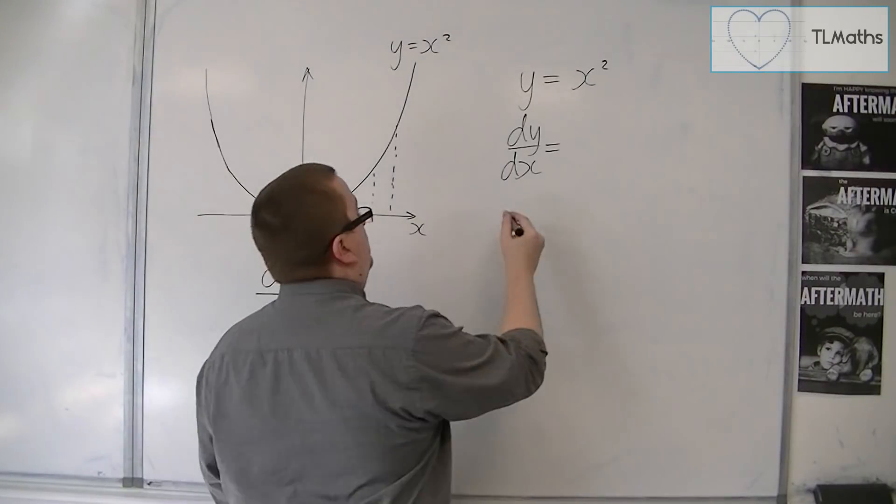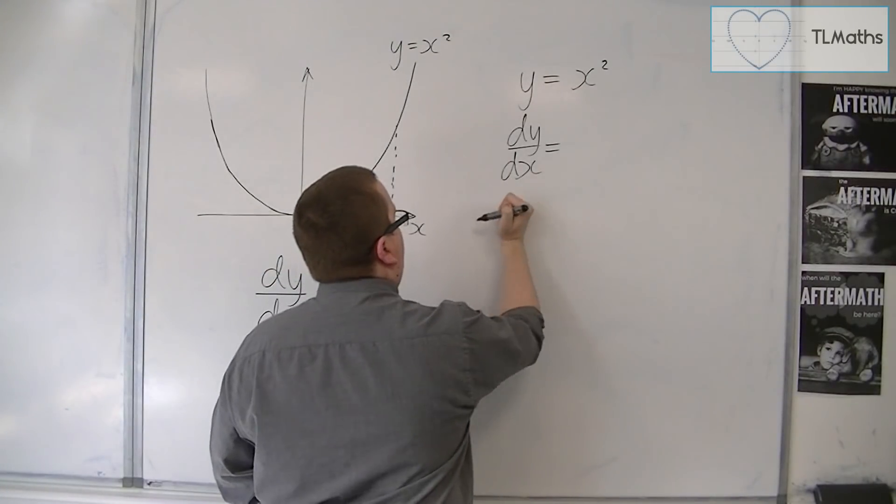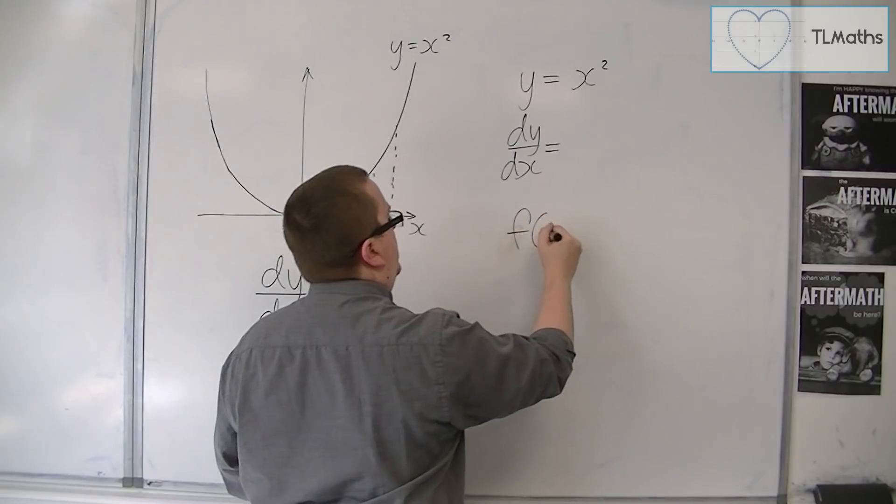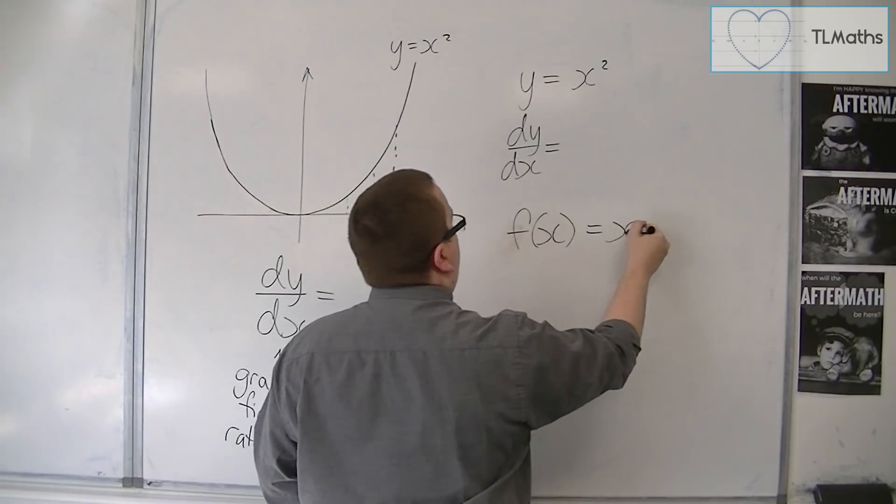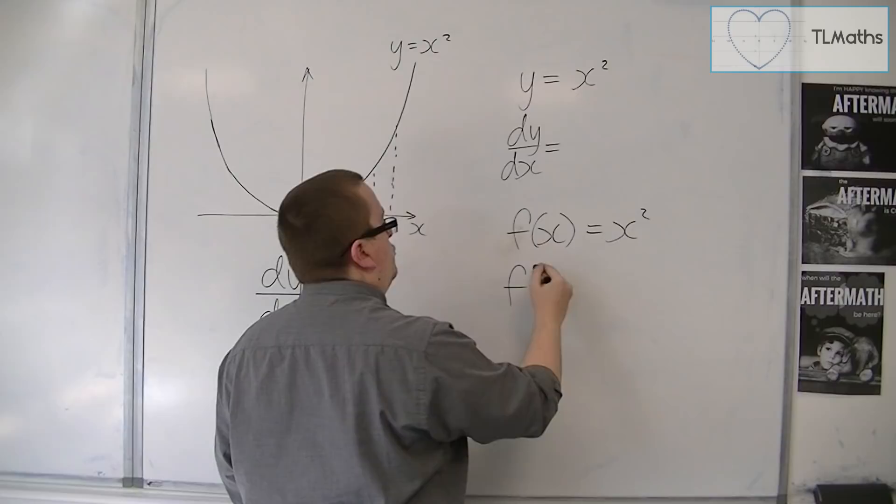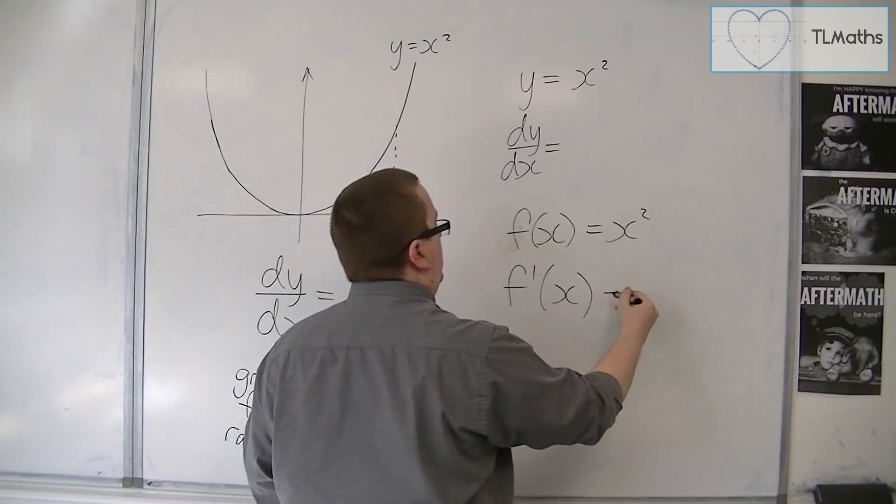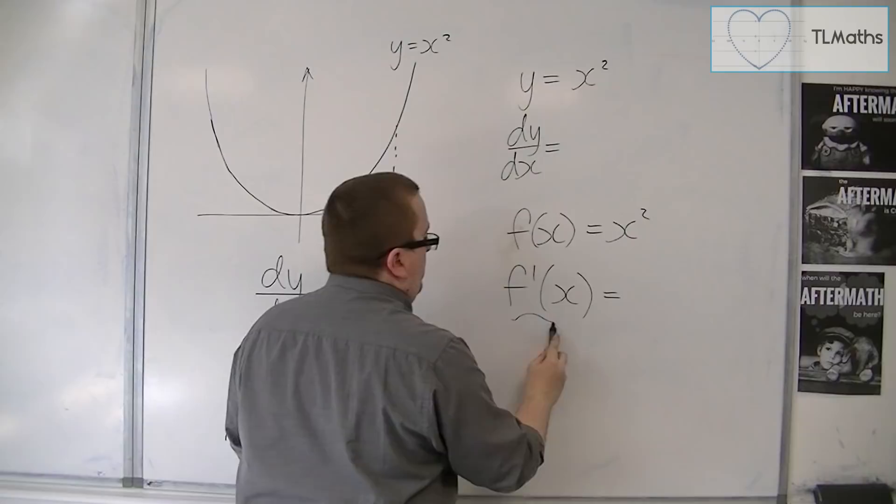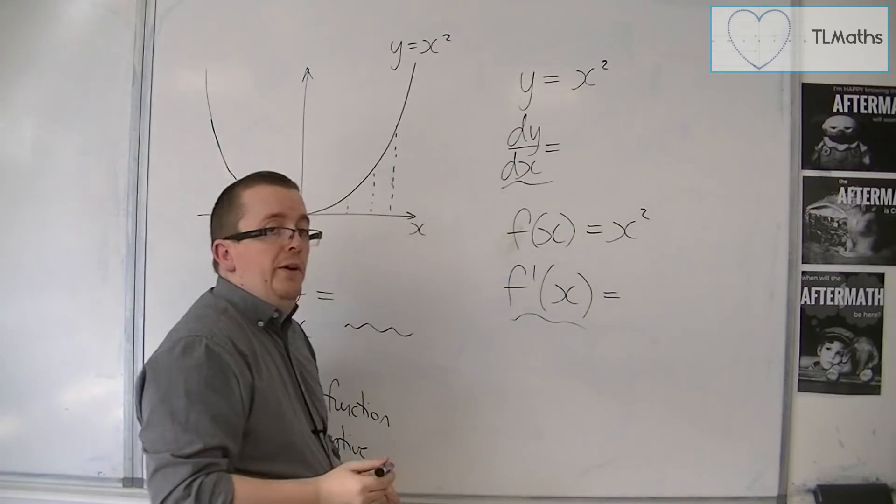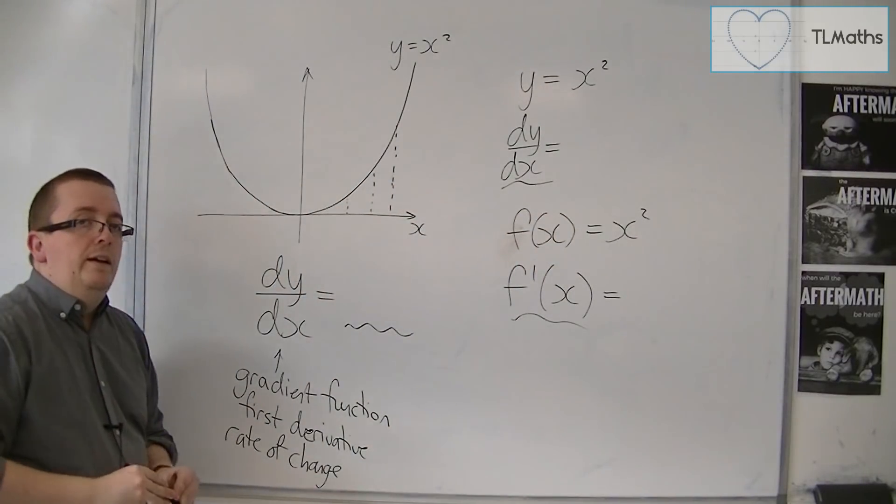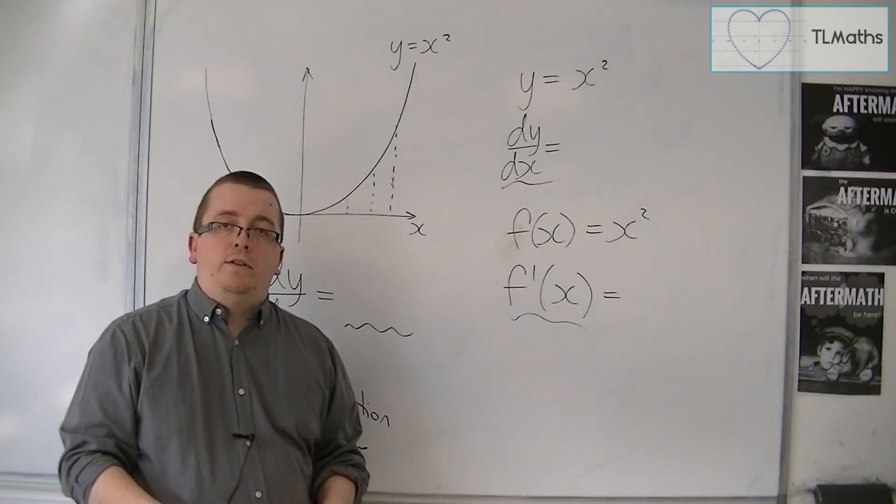And also, if you write it instead as function notation, so if you say that the function is x squared, then the first derivative is written as f prime of x. So these two things here are synonymous. They mean the same thing. It's just alternative notation for the same thing.